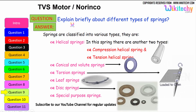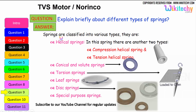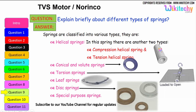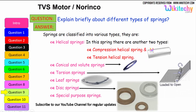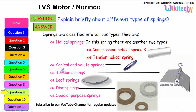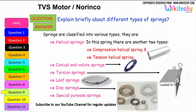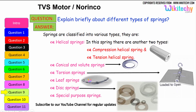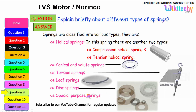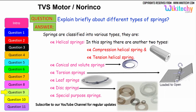Now let us briefly look at the different types of springs. Springs are classified into various types: helical springs — which include compression helical springs and tension helical springs — conical volume springs, torsion springs, leaf springs, disk springs, and special purpose springs. These are all the different types of springs available.